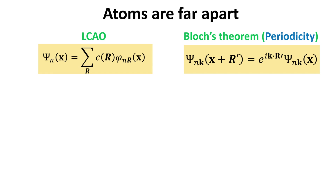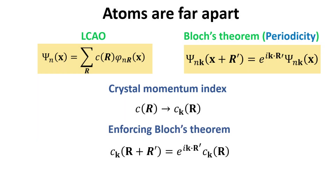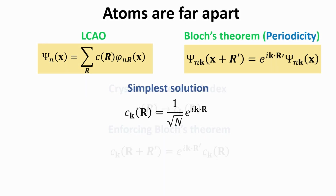First, let's analyze how the periodicity condition of Bloch states constrains the coefficients of the linear combination of atomic orbitals. The periodicity condition is highlighted in the yellow box to the right. We note that Bloch's theorem enforces that the coefficients display a dependence in k, the crystal momentum. Second, the periodicity condition enforces that the coefficient of the sum of two lattice vectors is an exponential phase factor that depends on one of the lattice vectors, times the coefficient C at the second lattice vector. The exponential phase factor is the same shown in the periodicity condition of Bloch's theorem.